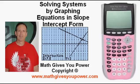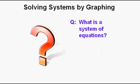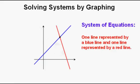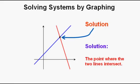Solving systems by graphing equations in slope-intercept form. A system of equations is at least two equations with the same variables. Here is a graph of a system of equations — one equation represented by a blue line and another by a red line. The point where the two lines intersect is the solution to this system of equations.